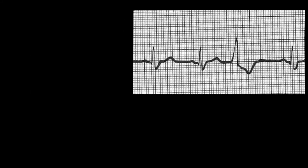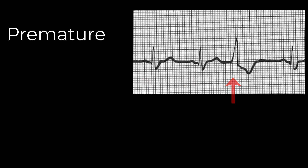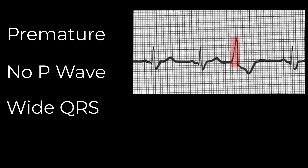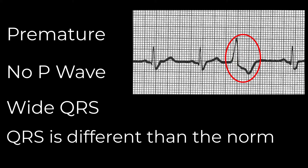There are a few key characteristics of PVCs that make them easy to recognize. First, they happen early — that is, before the next expected sinus beat. Second, there will be no P-wave present, or if there is a P-wave, it's not associated with the QRS. Third, the QRS will be wide. And finally, that QRS will look different than the normal QRS complexes for that patient, often moving in the opposite direction from the baseline.